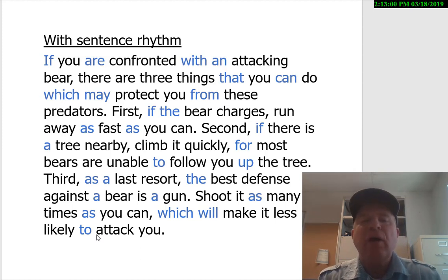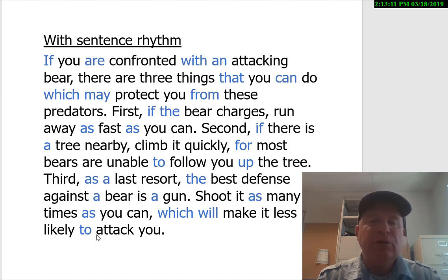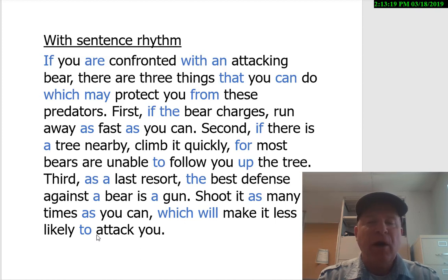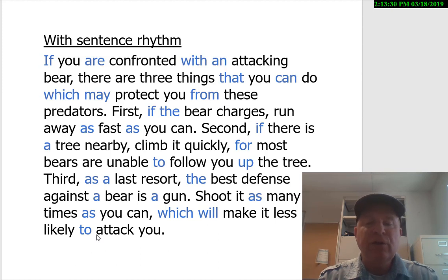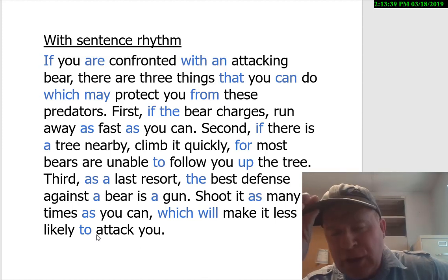Let me just show you what I'm talking about. If I read this without even saying those words, for example: you confronted attacking bear, there are three things you do protect you, these predators. Bear is first, bear charges, run away fast, you can. Second, there is tree nearby, climb it quickly. Most bears unable to follow you up the tree. Third, last resort, best defense against bear is gun. Shoot it many times, you can, make it less likely, attack you. Notice that even when I don't put those function words in there, the meaning is still pretty clear.